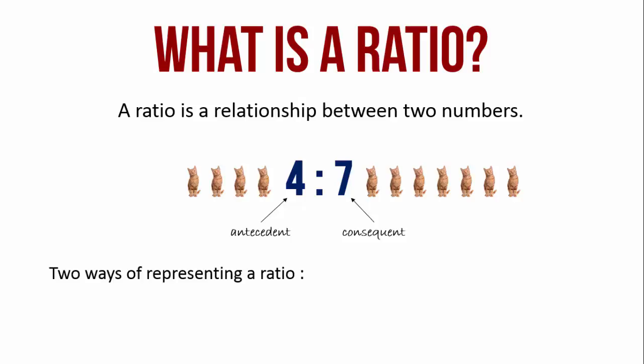There are two ways of representing a ratio. Using a colon which is read as 4 is to 7 and writing it as a fraction which is read as 4 by 7. Remember that all these are ways to write the same number.